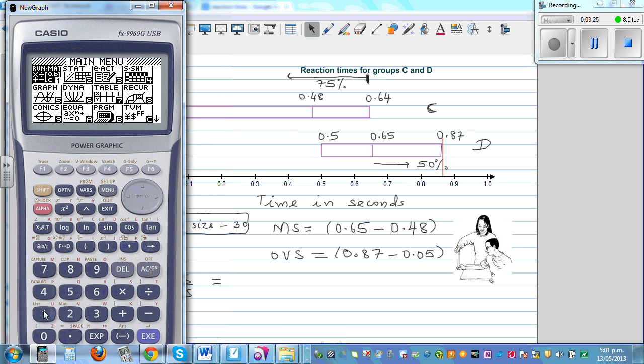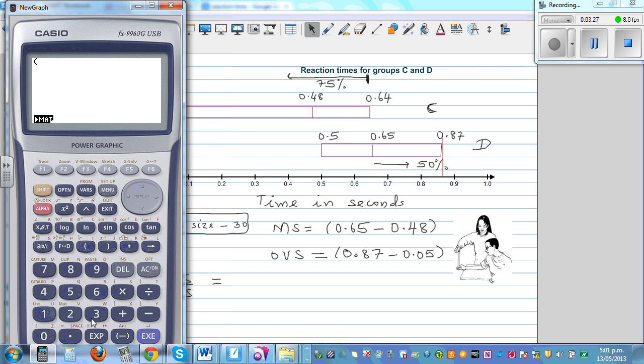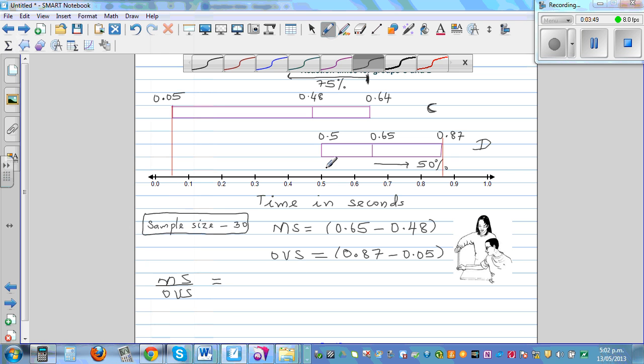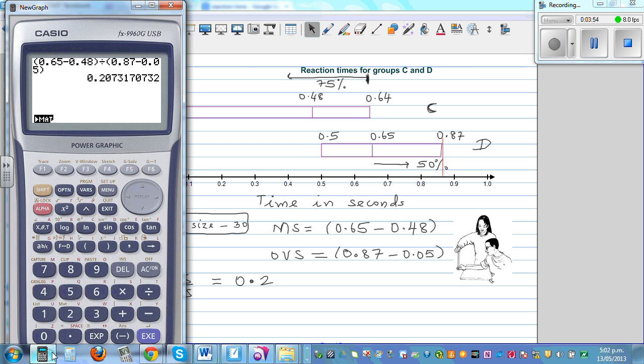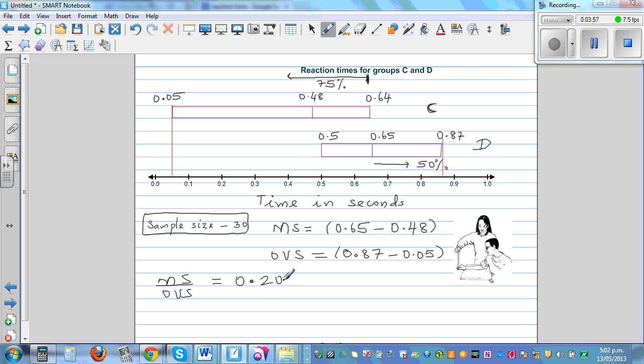So menu run. Let me put this in the bracket. 0.65 minus 0.48 divided by 0.87 take away 0.05. Let me write 0.2073. This as a percent, so as a decimal is 0.2. What was the number? 0.2073.